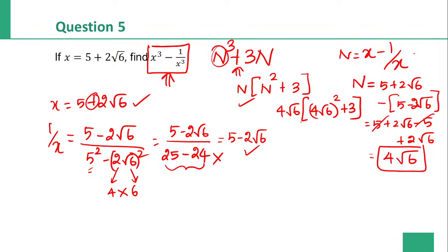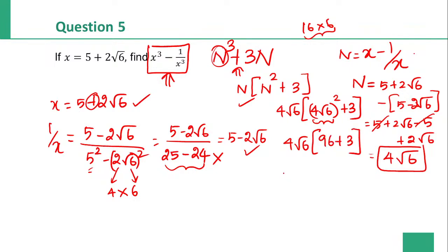n value is 4 root 6. For x cube minus 1 by x cube, the formula is n cube plus 3n where n is x minus 1 by x. n squared: 4 root 6 squared. 4 is squared: 16. Root 6 is squared: 6. So 16 into 6 is 96. So n squared plus 3: 96 plus 3 is 99.